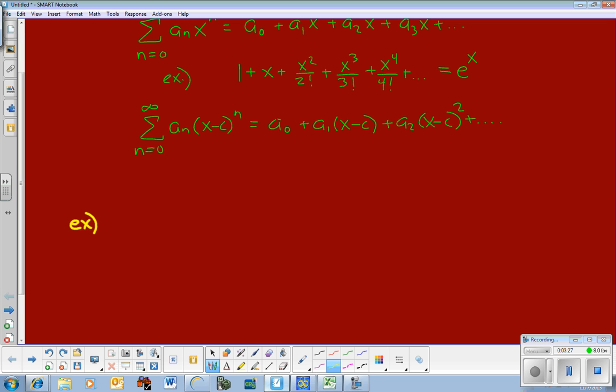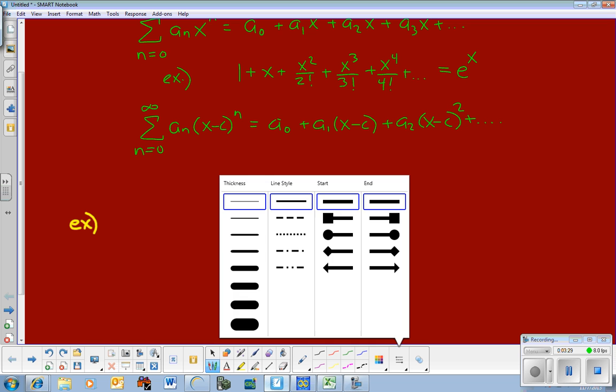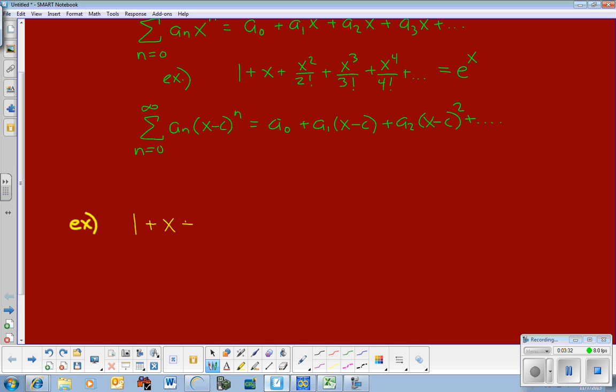An example power series, like 1 plus x plus x squared plus x cubed. This power series isn't just numbers. So when we talk about convergence or divergence, this one is centered at 0 because we don't have x minus some number. It depends on what x we plug in, whether or not it's going to converge. Let me say that again. Whether or not this series converges depends on what x is.